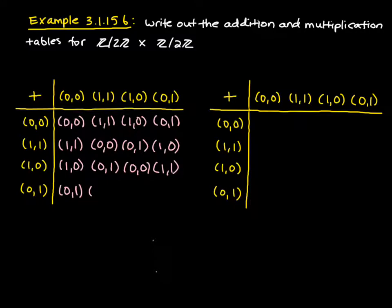And if I look at this last row, I'll have a (1,0), a (1,1), and a (0,0). So this is how we do addition.